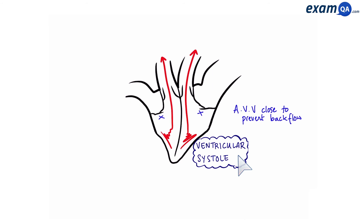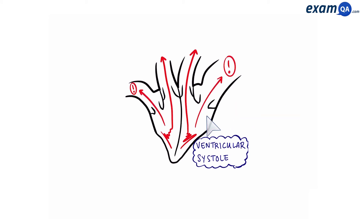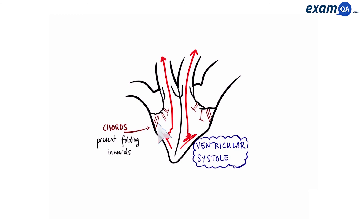One more thing about ventricular systole: the atrioventricular valves close, which is important because otherwise blood would flow back into the atria. However, because the pressure inside the ventricles is so great, this could potentially force the atrioventricular valves to fold backwards, allowing blood to make its way back to the atria. To prevent this, the heart has cords — fibres attached to the atrioventricular valves and to the walls of the ventricles — that hold them together, preventing them from folding inwards.